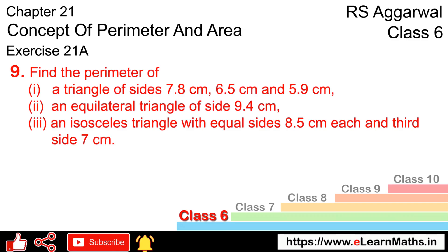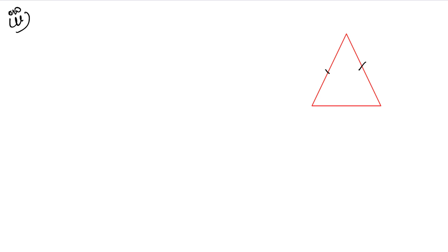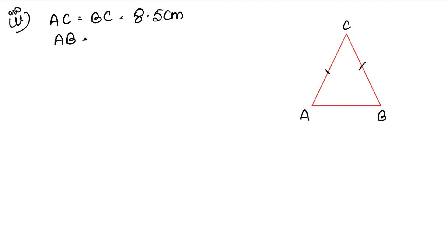Let's do the last part now. The last part is an isosceles triangle with equal sides of 8.5 cm each and the third side is 7 cm. In an isosceles triangle, AC and BC are the equal sides at 8.5 cm, and AB is the third side at 7 cm.